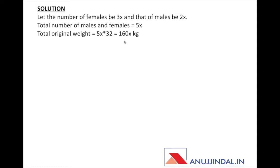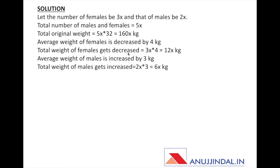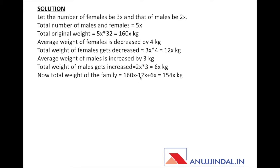So 5x multiplied by 32 gives the total original weight as 160x kg. The average weight of females decreased by 4 kg, so the total weight decrease for females is 3x times 4, which equals 12x kg. Similarly, the average weight of males increased by 3 kg, so the total weight increase for males is 2x times 3, which equals 6x kg. The new total weight of the family is 160x minus 12x plus 6x, which comes out to 154x kg.